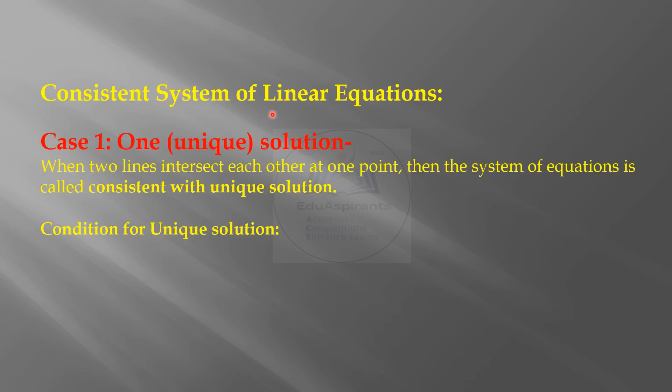Consistent system of linear equations. Case 1: One unique solution. When two lines intersect each other at one point, then the system of equations is called consistent with unique solution. Condition for unique solution: a1 upon a2 is not equal to b1 upon b2.